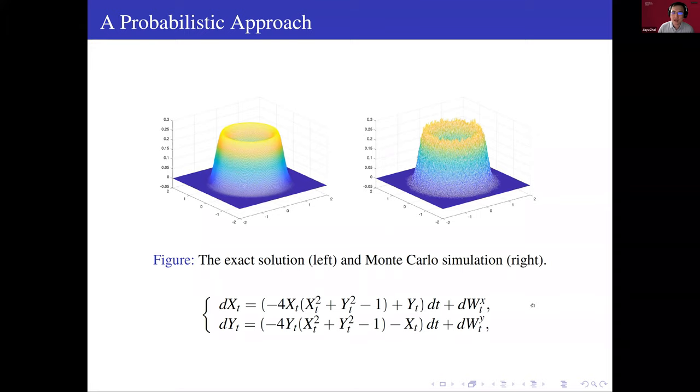We can see this from the following example. For this SDE, the invariant measure is this ring-like density function. So if we use the Monte Carlo approximation, we will get these results. So globally, it is a good approximation as a distribution function. But in any local area, the approximation is not accurate. This is a contradiction because we want to use this method to find out local densities. But it is not accurate locally.